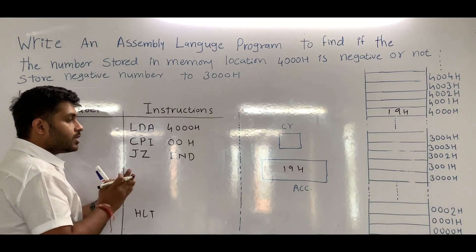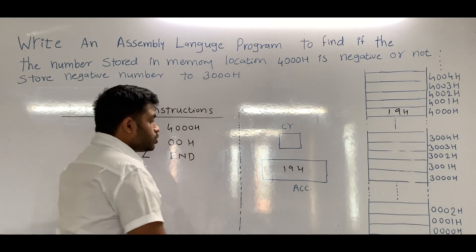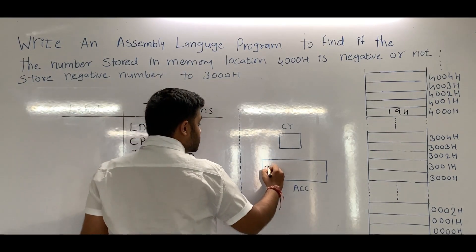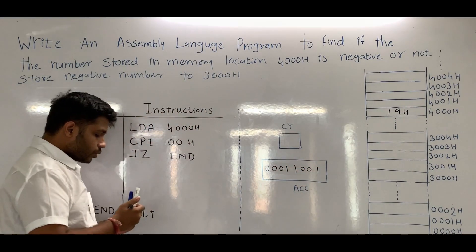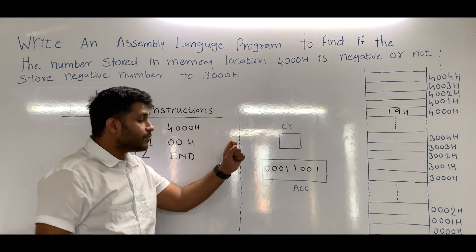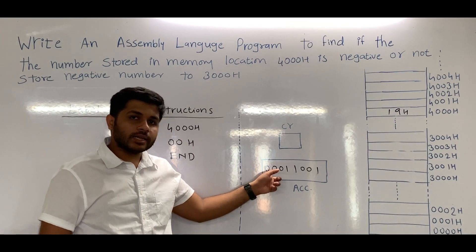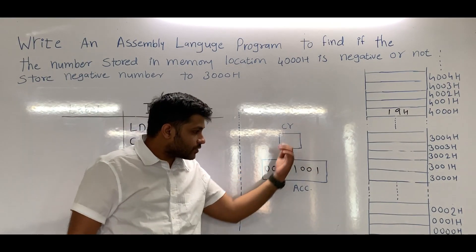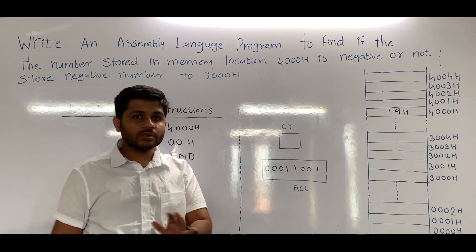To check whether the number is negative or positive, we will perform some operation on the accumulator. Let's represent 19H in binary: 1 is 0001, and 9 is 1001, giving us 00011001. To determine sign, we check the MSB. If the MSB is 0, the number is positive; if the MSB is 1, it is negative. Right now the number is positive. However, by just transferring data to the accumulator, no flag will be set, because in data transfer instructions no flags are affected.